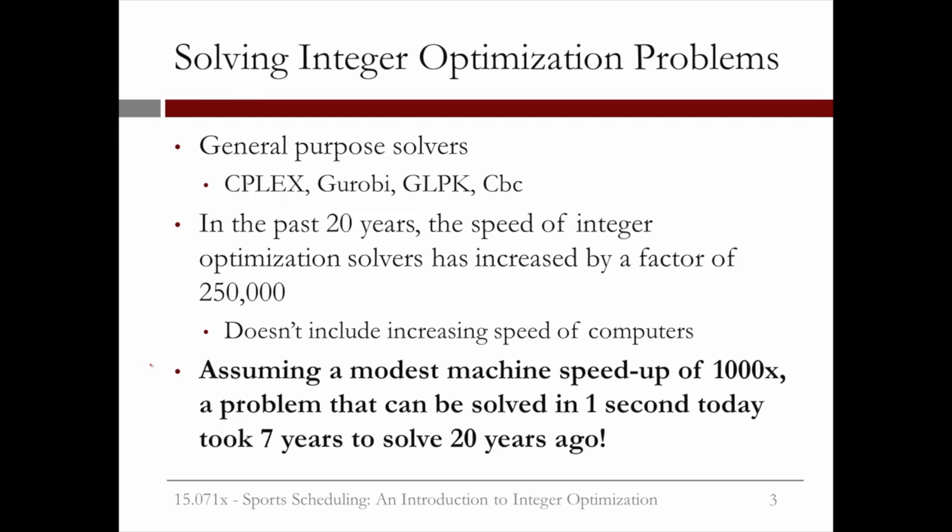In addition to changing the formulation and using heuristics, there are general-purpose optimization solvers that can solve large problems. These include CPLEX, Gurobi, GLPK, and CBC, a CoinOR project. Most practitioners who solve large optimization problems use one of these software packages.